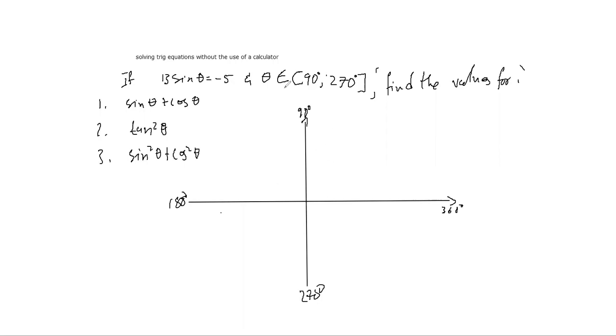We established previously that all ratios are positive in the first quadrant. In the second quadrant only sine and its reciprocal. In the third quadrant only tan and its reciprocal. Finally, in the fourth quadrant only cosine and its reciprocal.